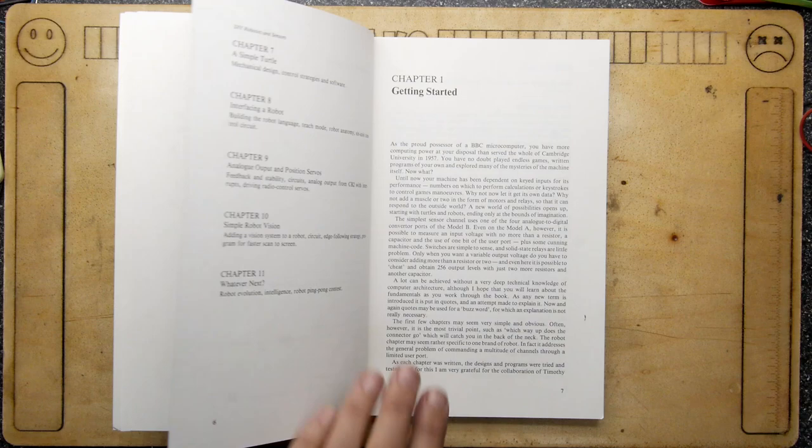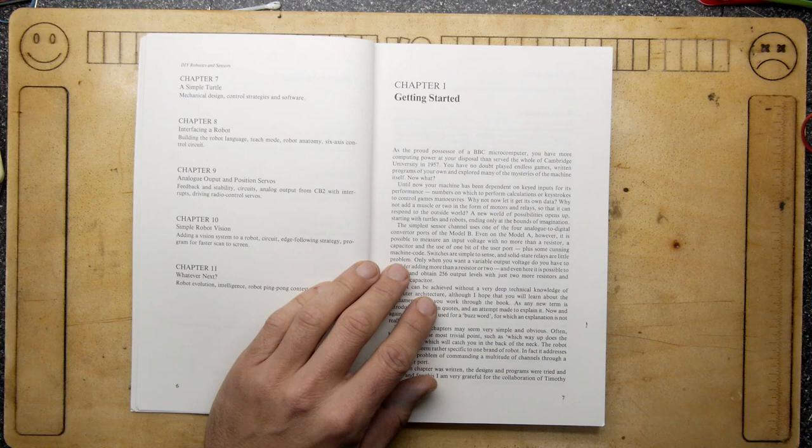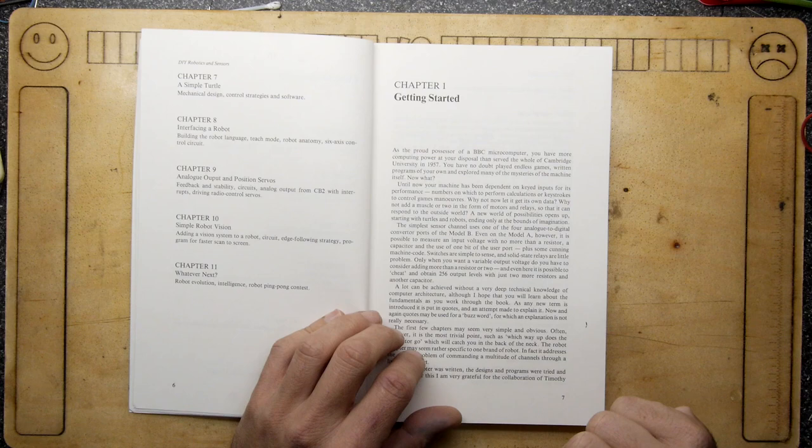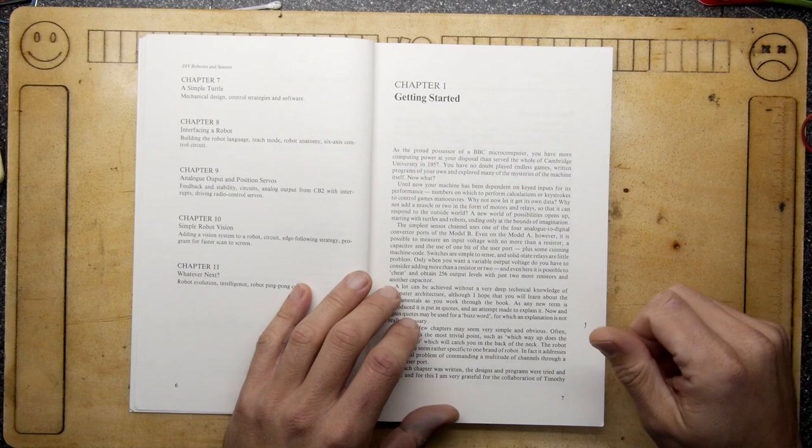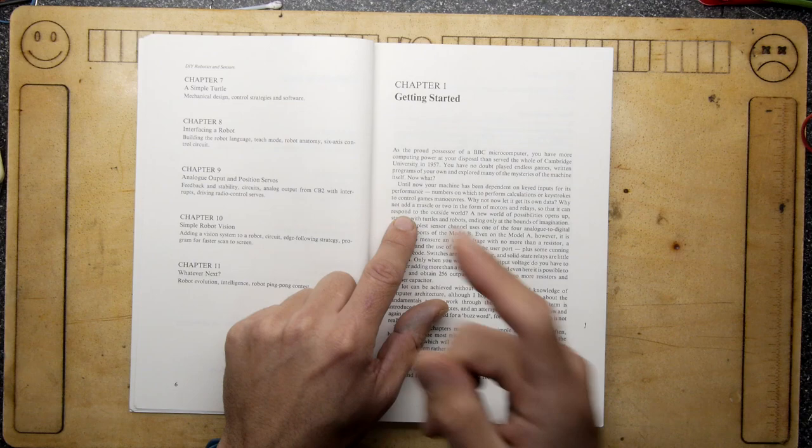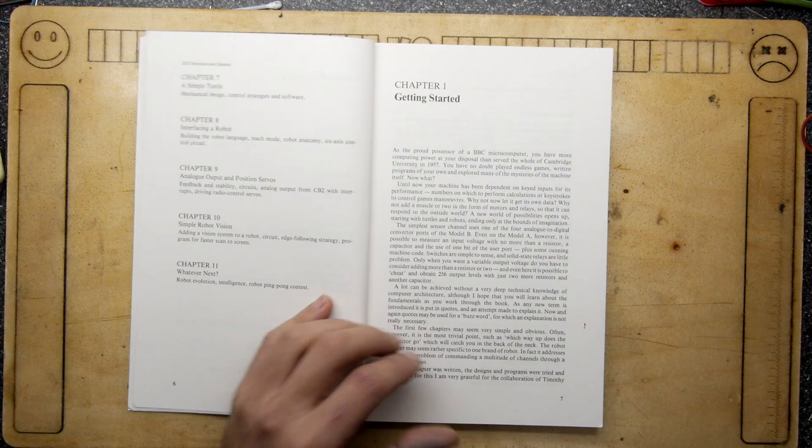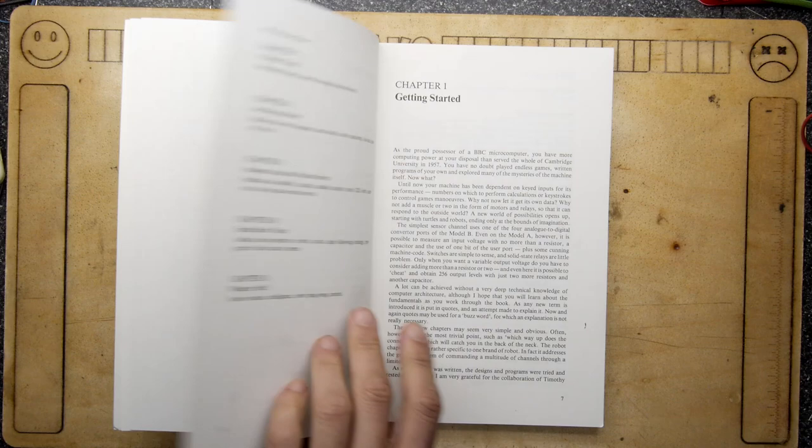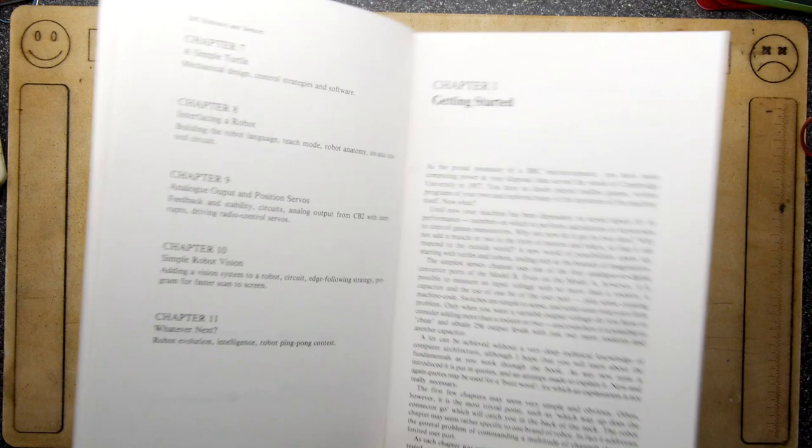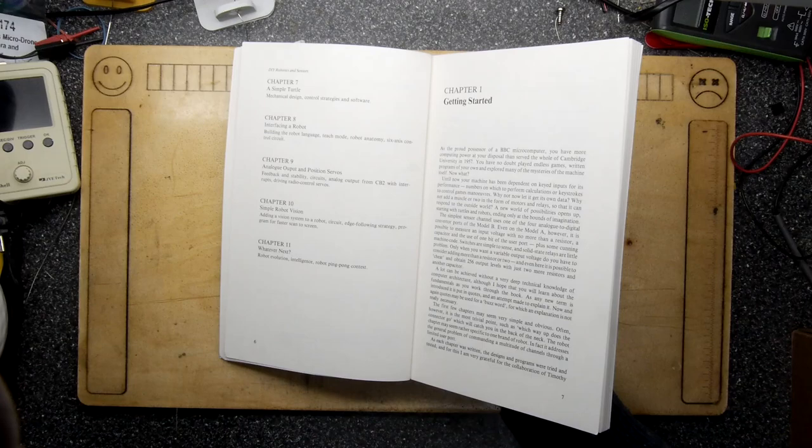Until now your machine has been dependent on keyed inputs, numbers on which to perform calculations or keystrokes to control games maneuvers. Why not now let it get its own data? Why not add muscle or two in the form of motors and relays so that it can respond to the outside world? A new world of possibilities opens up, starting with turtles and robotics, ending only at the bounds of imagination. This is some heady stuff. I could just sit and read this right now but we can't because we're looking through it, it's a kind of show and tell.